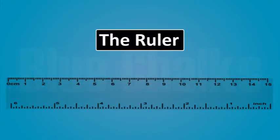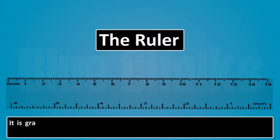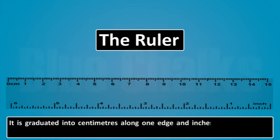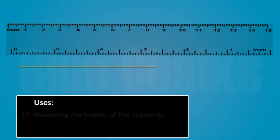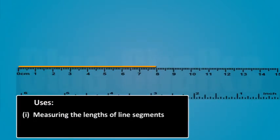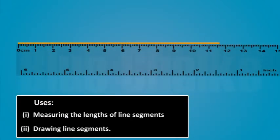The ruler, also known as scale, has a flat surface. It is graduated into centimeters along one edge and sometimes into inches along the other edge. The ruler is mainly used for measuring the length of line segments and drawing line segments.